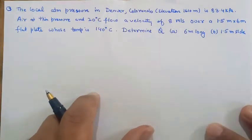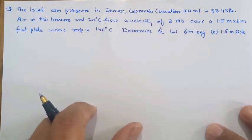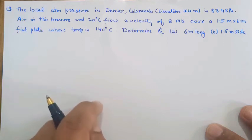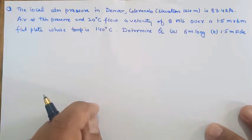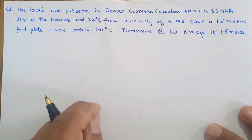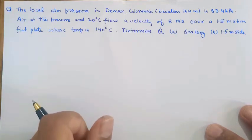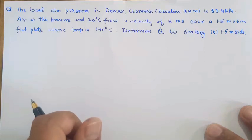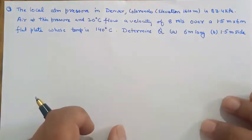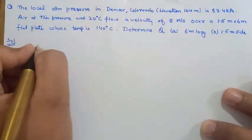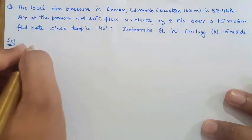The third numerical: the local atmospheric pressure in Denver, Colorado at an elevation of 1610 meters is 83.4 kilopascal. Air at this pressure and 20 degree flows at 8 meter per second over a 1.5 meter by 6 meter flat plate whose temperature is 140 degree centigrade. Determine Q along the 6 meter length and along the 1.5 meter length, and decide which flow direction gives better heat transfer.